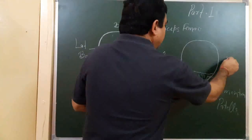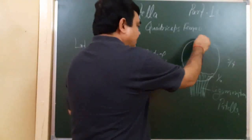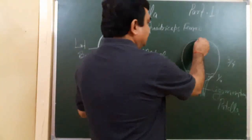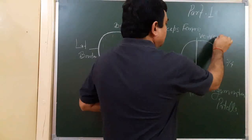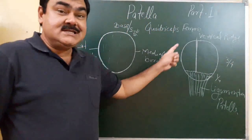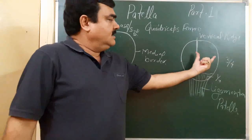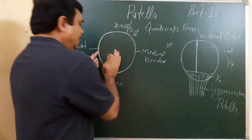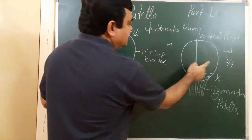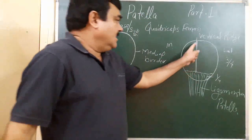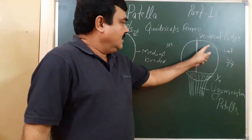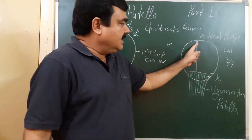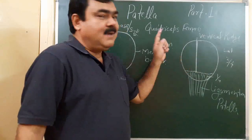The upper three-fourths part of the posterior surface is articular. It is divided into two regions — a lateral portion and a medial portion — by a vertical ridge. In this diagram, this is the lateral portion and this is the medial portion. The lateral border and medial border correspond accordingly.